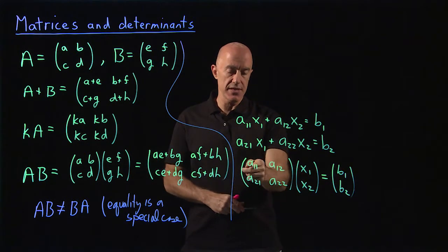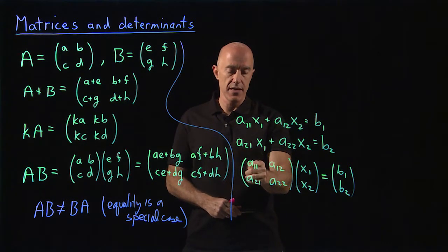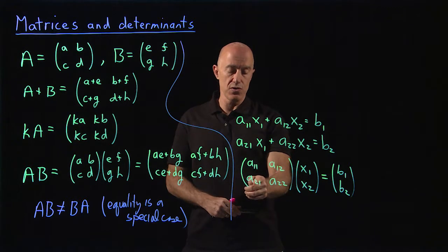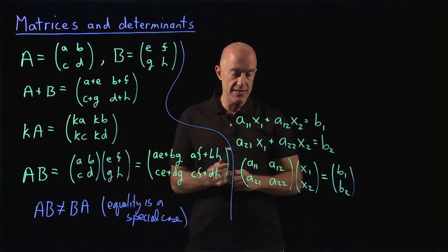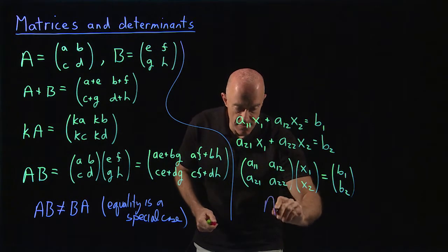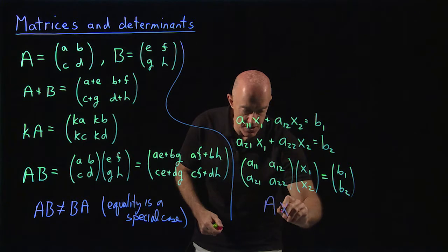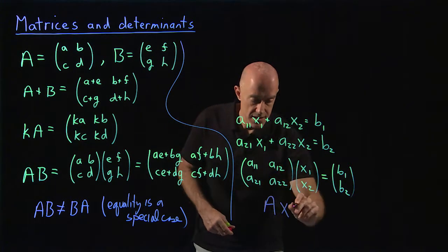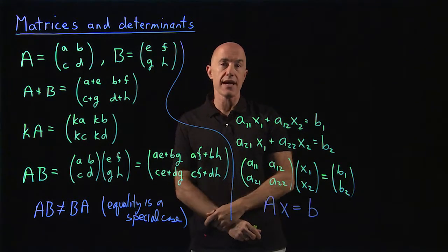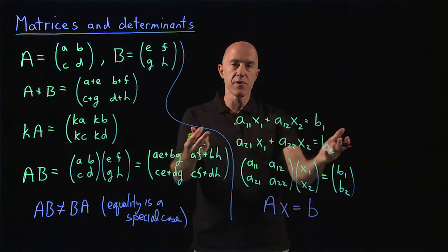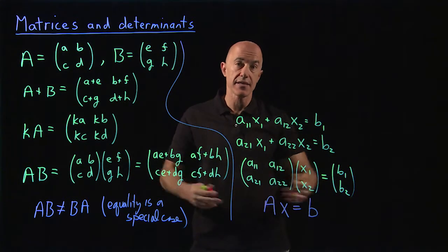The first index means row and the second index means column: A11 is row one column one, A12 is row one column two, A21 is row two column one, A22 is row two column two. In shorthand, we write this matrix equation as A times the vector X equals the vector B, so AX equals B. A system of linear equations can be written as AX equals B.